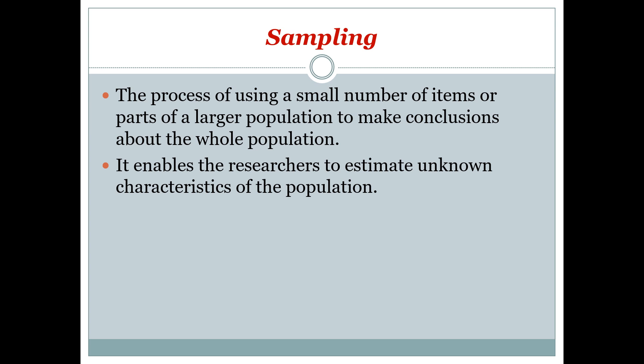Sampling is the process of using a small number of items or parts of a larger population to make conclusions about the whole population. It enables the researcher to estimate unknown characteristics of the population. For example, if we cooked some rice and want to test it — we just take a bite to assess the quality or stage of preparation, and then make appropriate adjustments.